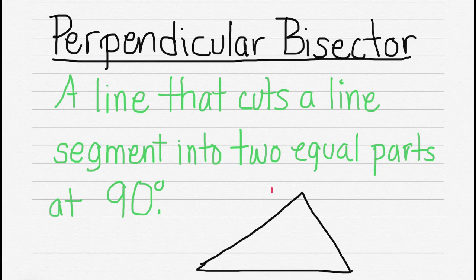Perpendicular bisector kind of defines itself. Perpendicular is 90 degrees, and bisector is dividing into two equal parts. So a perpendicular bisector is kind of like a median and an altitude, but it does not have to start at a vertex.